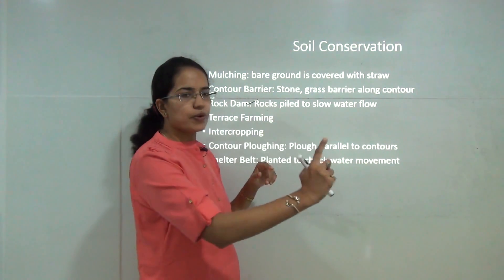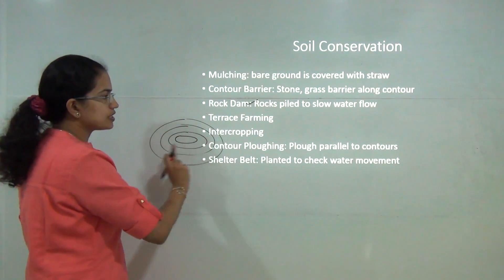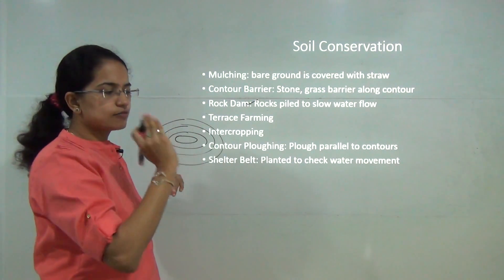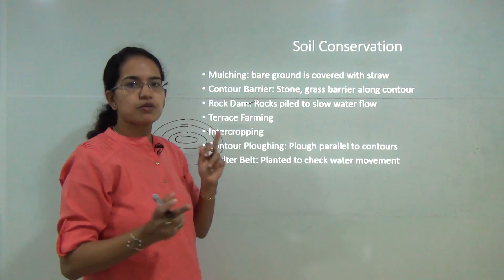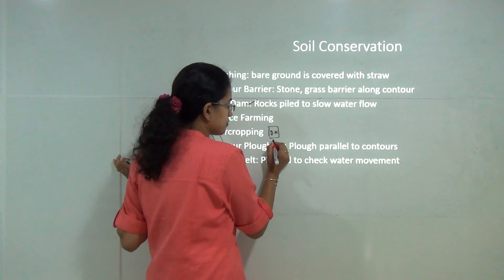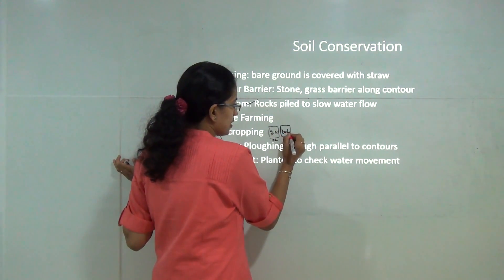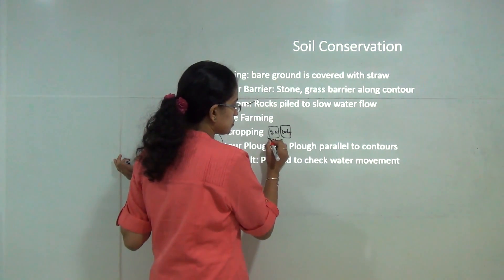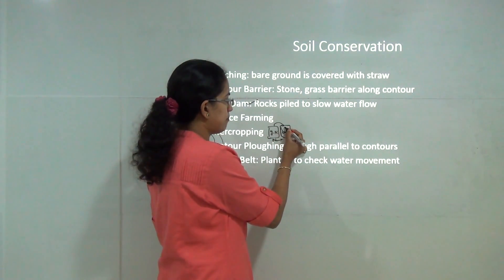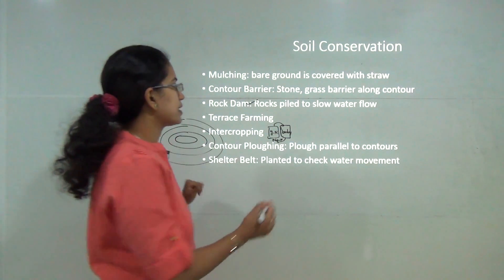Contour ploughing means ploughing parallel to contour lines of equal height, creating a farming pattern that reduces erosion. Intercropping involves growing more than one crop at a time - for example, groundnut increases nitrates in soil while barley uses nitrogen, so nutrients are replenished alternately. Terrace farming is common in mountain and hilly areas, where land is cut into steps for cultivation.